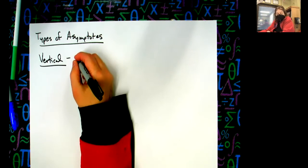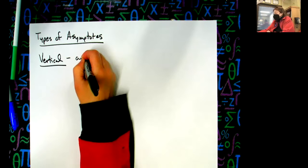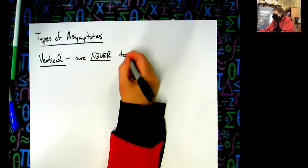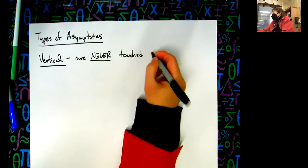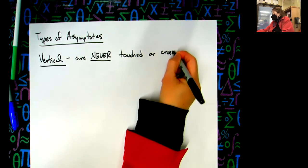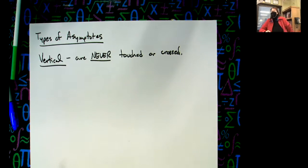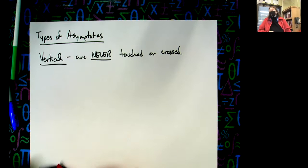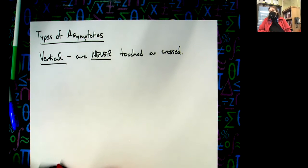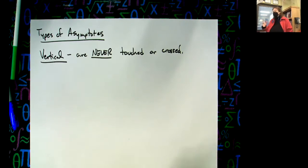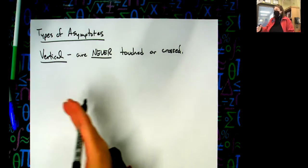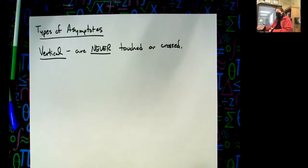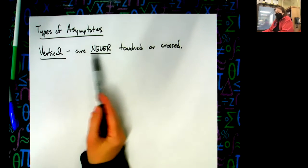So we're going to put for vertical: never touched or crossed. We're actually telling you the truth - vertical ones are sacred, partly because if it's a vertical asymptote, it has to be an exclusion from the domain. We can't go against a domain. If we know how to calculate the domain, we can't then later say that's going to be in the domain. Because I can't have a conflict of interest, they are never touched or crossed.